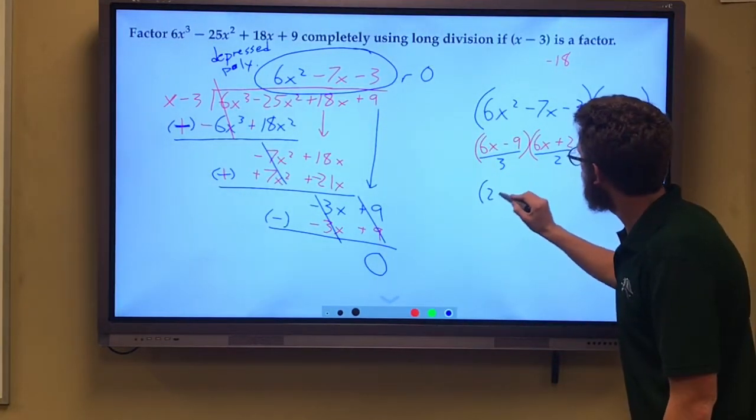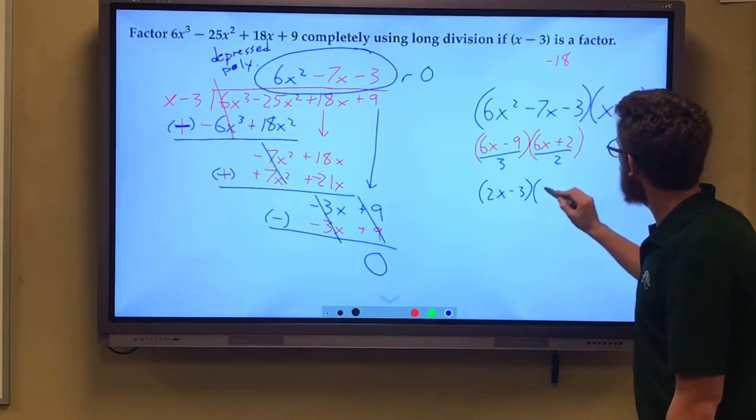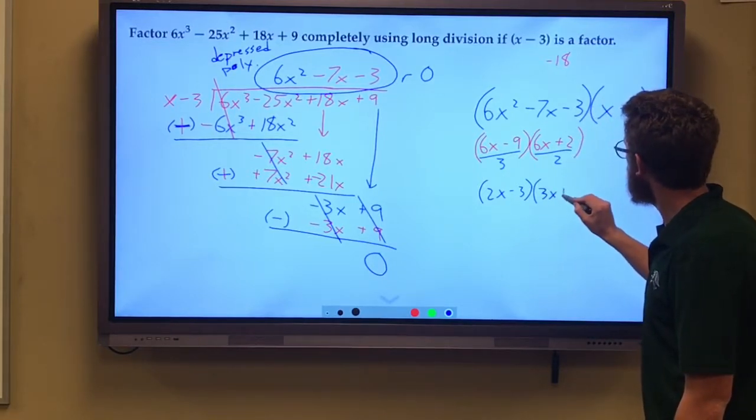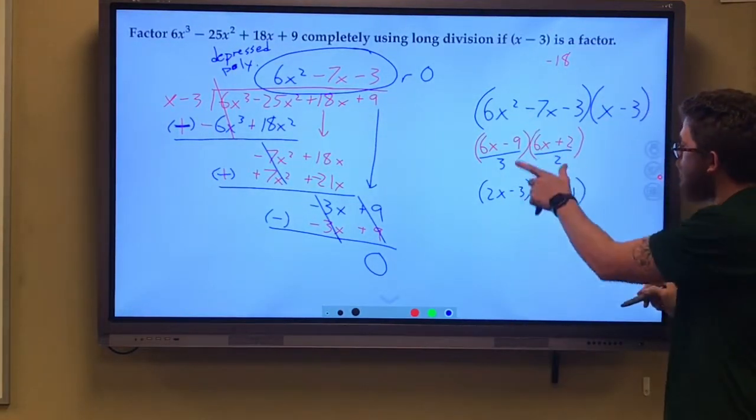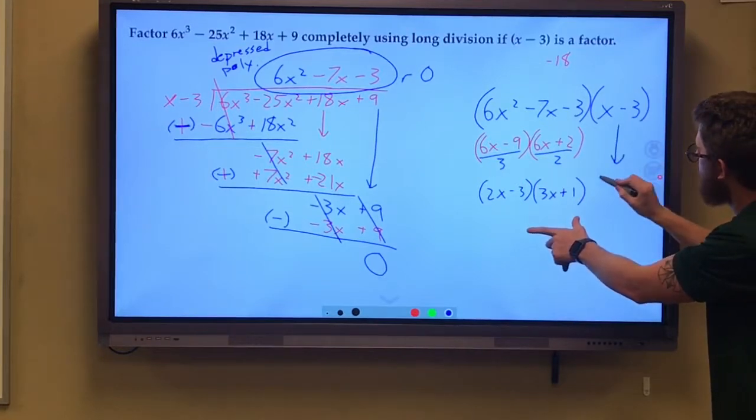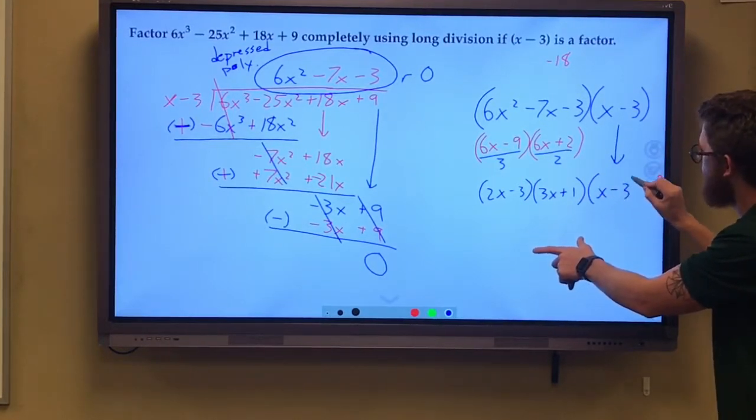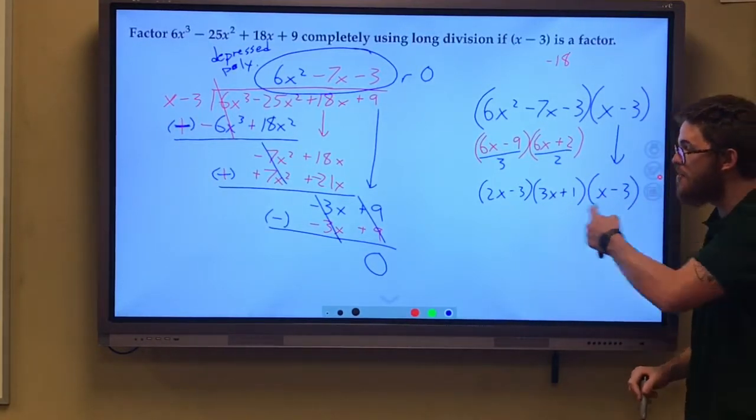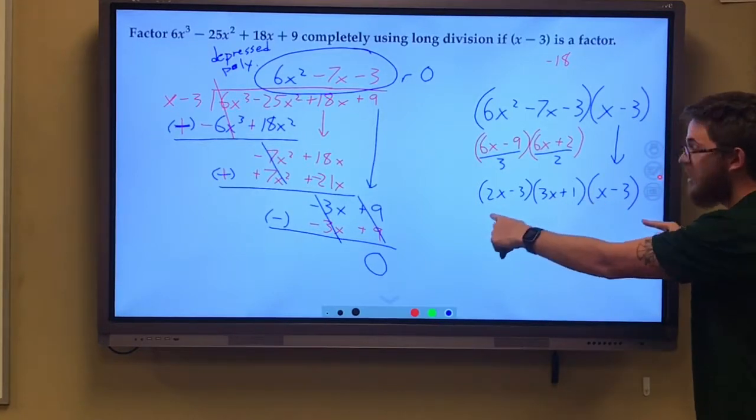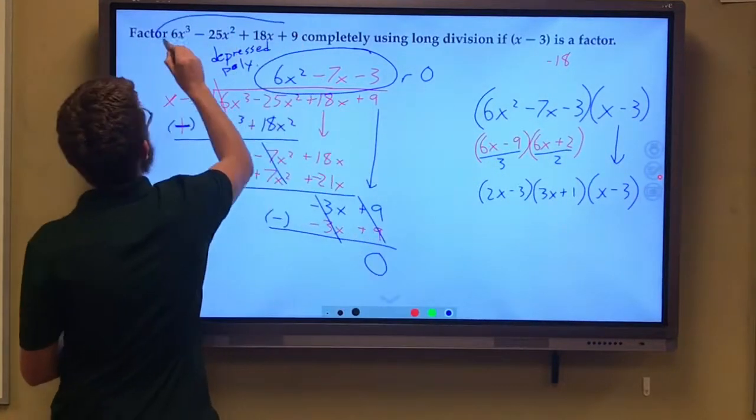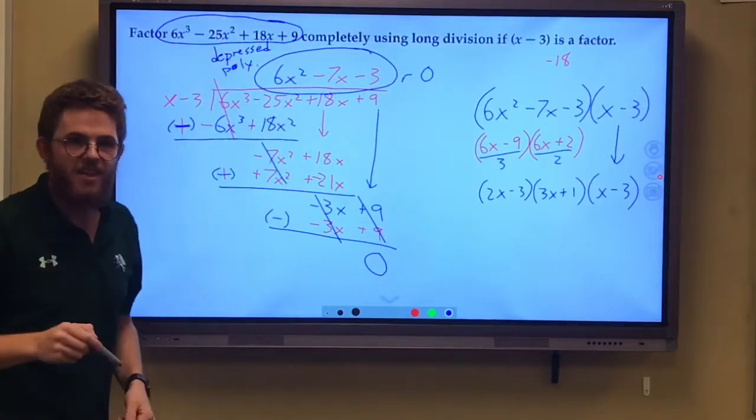And so I'm left with 2x minus 3 times 3x plus 1. I've broken this down, and then this one stays exactly the same because we cannot break that down anymore. This is the complete factorization of our original.